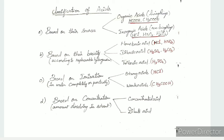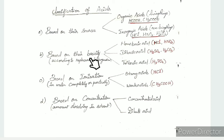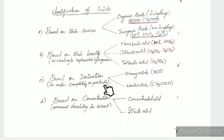In summary, there are four types of acid classification. One is based on source. Two is based on basicity — the number of replaceable hydrogen atoms. Three is based on ionization — complete or partial. Four is based on concentration — the amount of acid in the solvent.